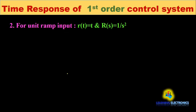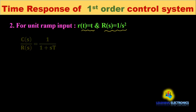Now we will find out the time response of the first order control system when subjected to unit ramp input. We know that for unit ramp input, r(t) = t. When we take the Laplace transform of this, R(s) = 1/s². Now for the first order control system, C(s)/R(s) = 1/(1 + sT).